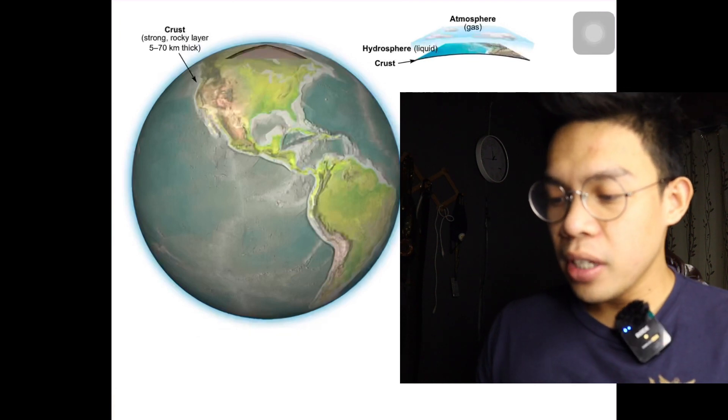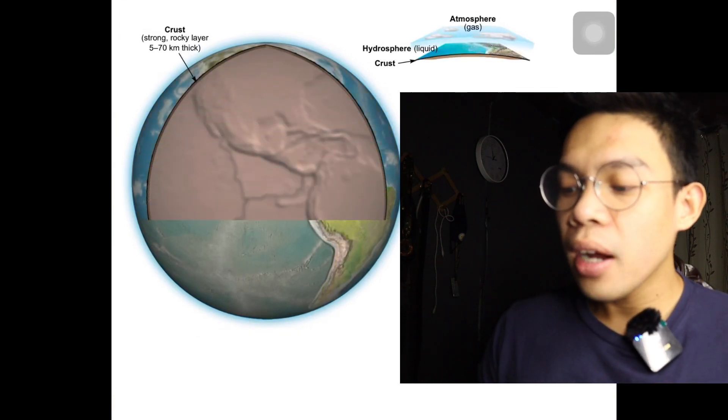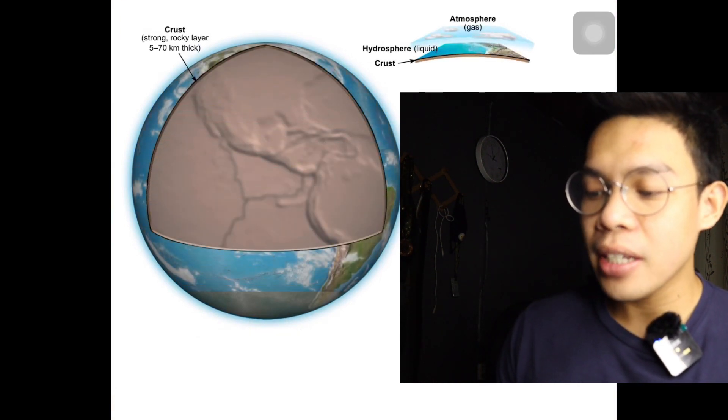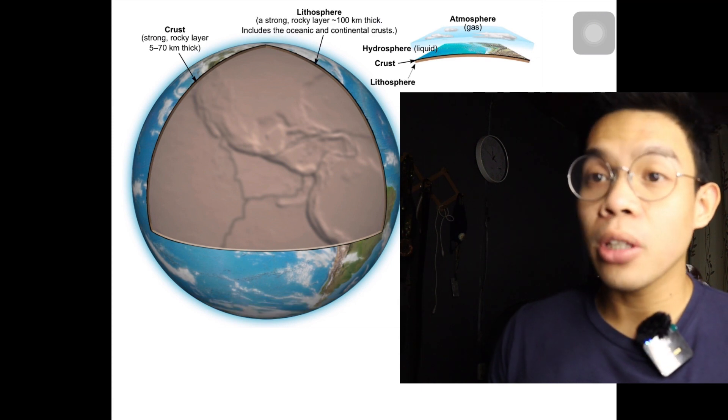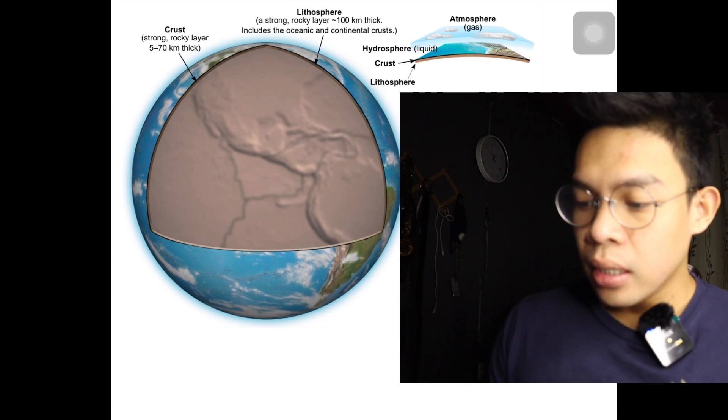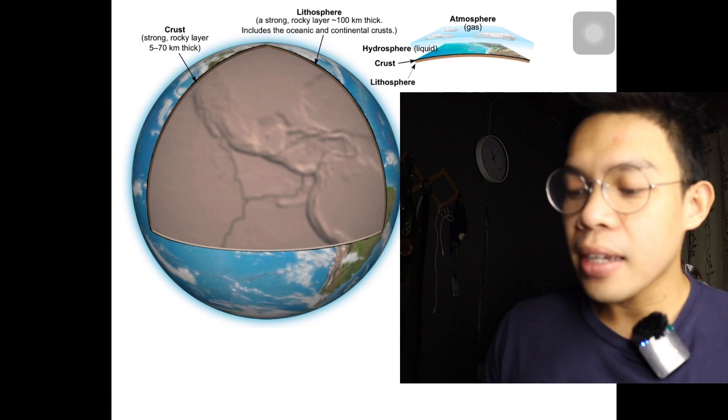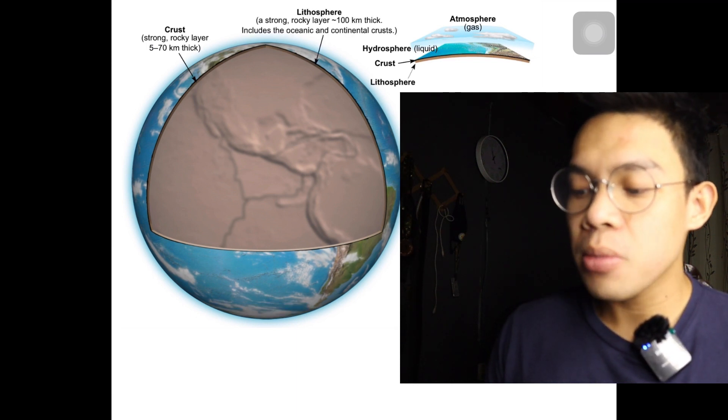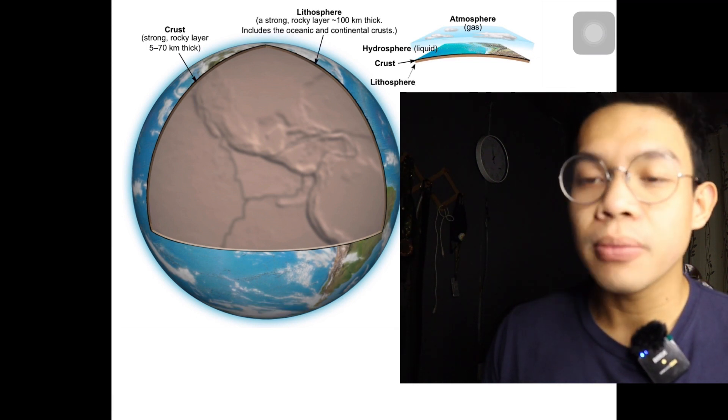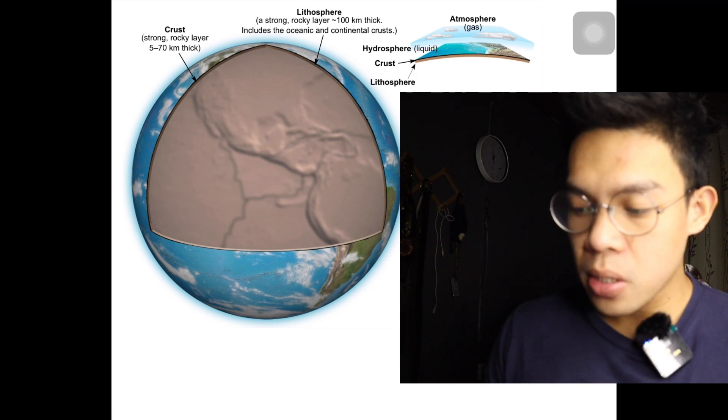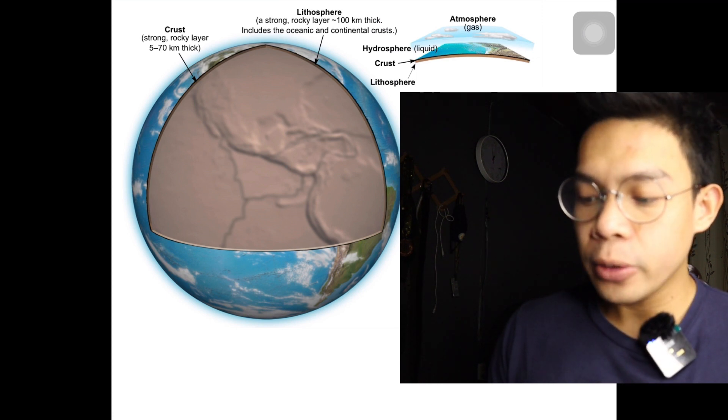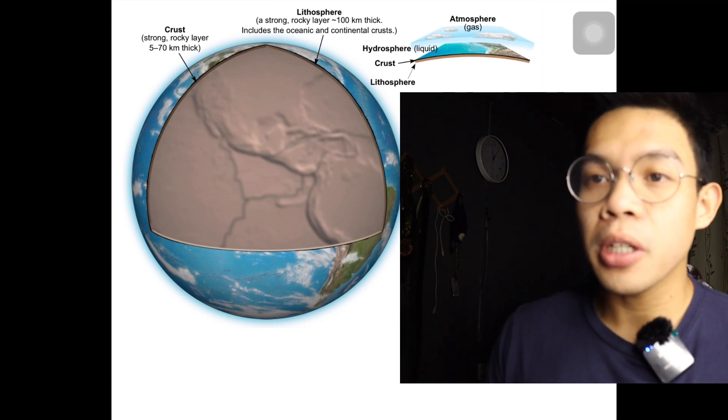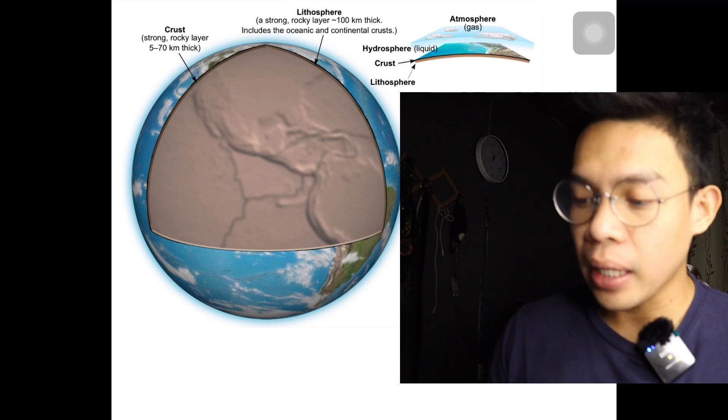The lithosphere is a relatively cool, rocky layer that averages about 100 kilometers (62 miles) thick. It includes the continental and oceanic crusts and the lower portion, sometimes called the lithospheric mantle. The lithosphere is divided into various-sized pieces called lithospheric plates, or simply plates.